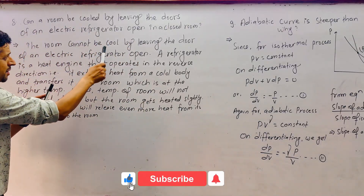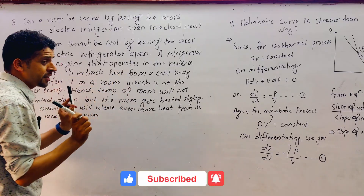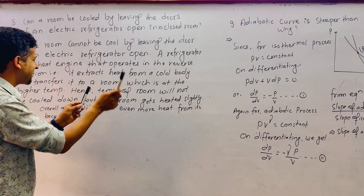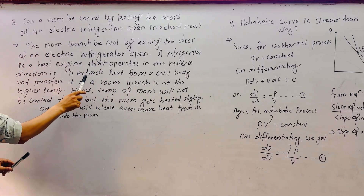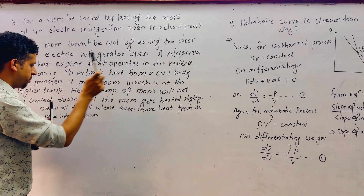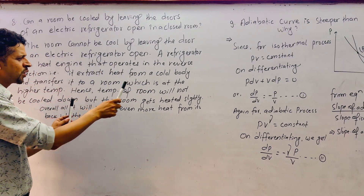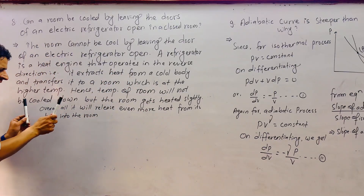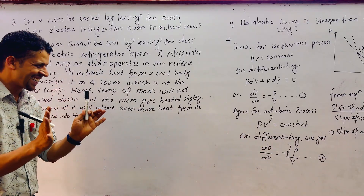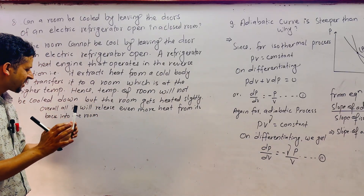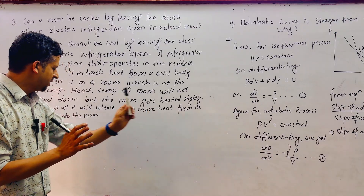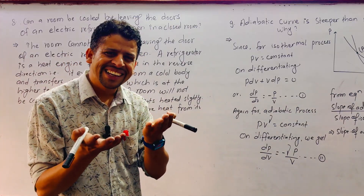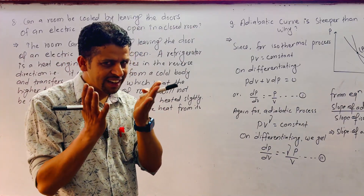Question 8: A room cannot be cooled by leaving the door of an electric refrigerator open. A refrigerator is a heat engine that operates in reverse, extracting heat from a cooled body and transferring it to the room at a higher temperature. Hence, the temperature of the room will not decrease but will actually get heated slightly, as the refrigerator releases even more heat from its back into the room.